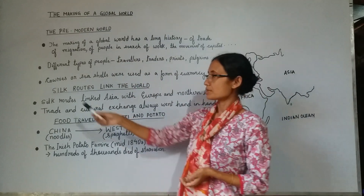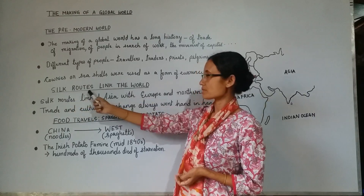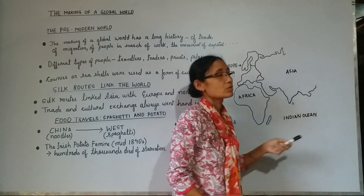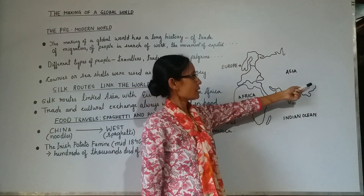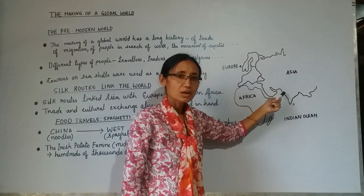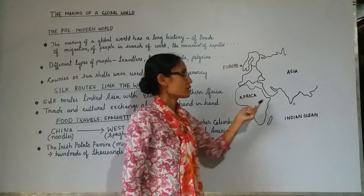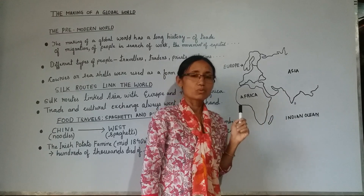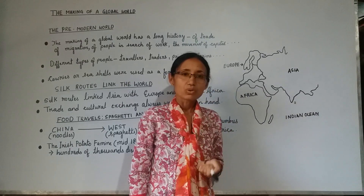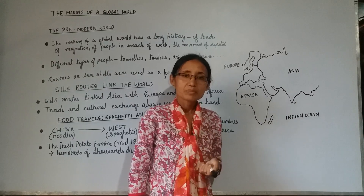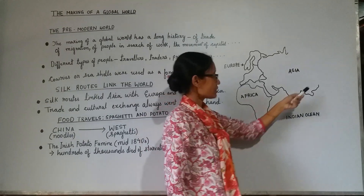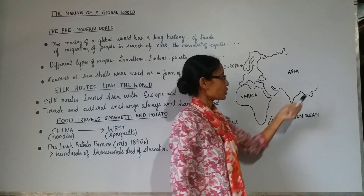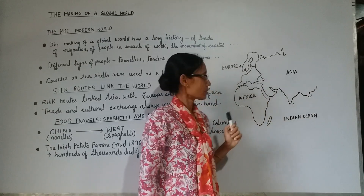Let's move to the next subtopic: silk routes link the world. What are these silk routes? Silk routes were the various routes which connect China with other parts of Asia, from Asia with Europe and the northern part of Africa, over land and by the seas. Why was the name 'silk route' given? Because in those days, famous Chinese silk cargos used to travel from China towards the western countries. Apart from silk, pottery also used to travel from China towards western countries.